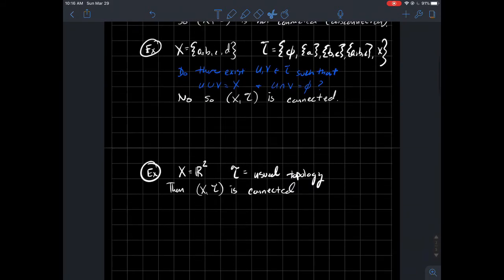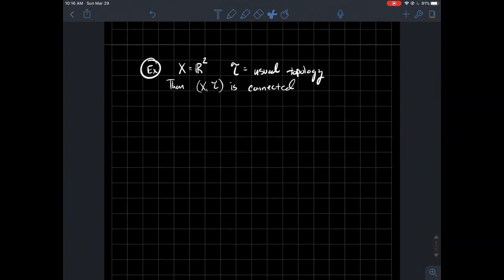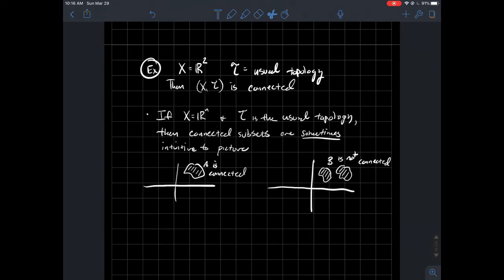Let me give you some more very common examples. So the plane with the usual topology, like open balls from your distance function, that's going to be a connected space. And let me say too, as well, if you're dealing with R^n, so like R^2 above is not special, and if T is the usual topology...